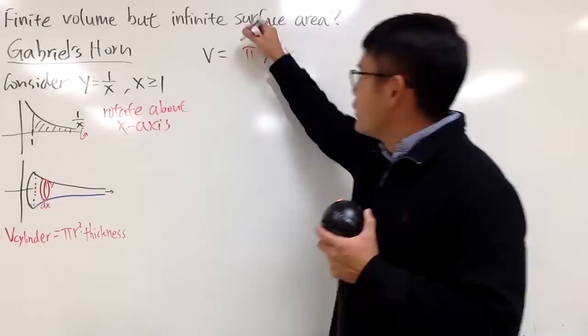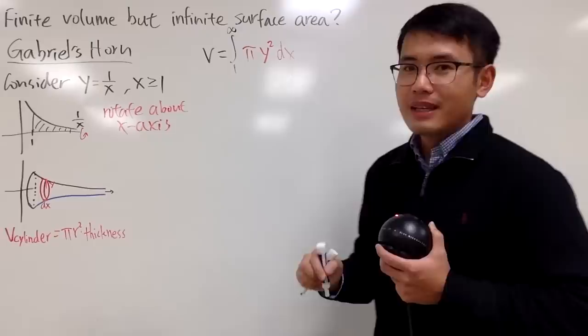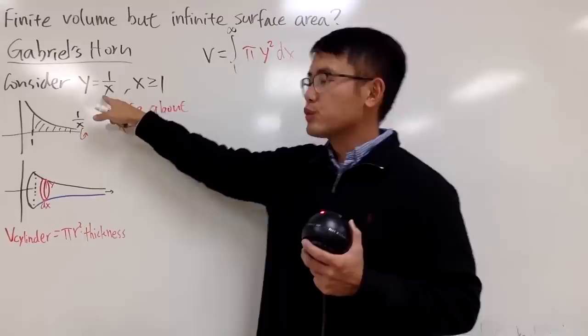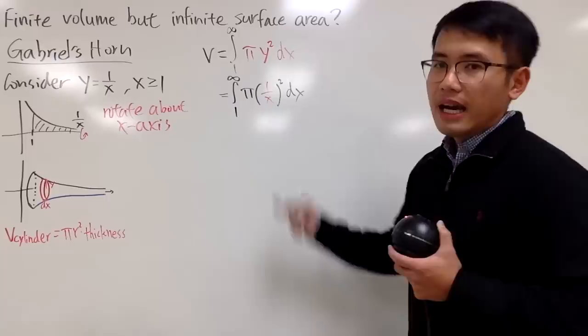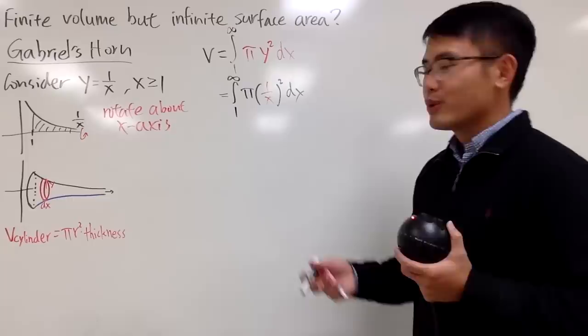Then we have to add up all of the disks, meaning that we have to do integration from 1 to infinity. We integrate from x equals 1 to infinity. And as you can see, y is not invited in the x world, but it's okay because y is just 1 over x.